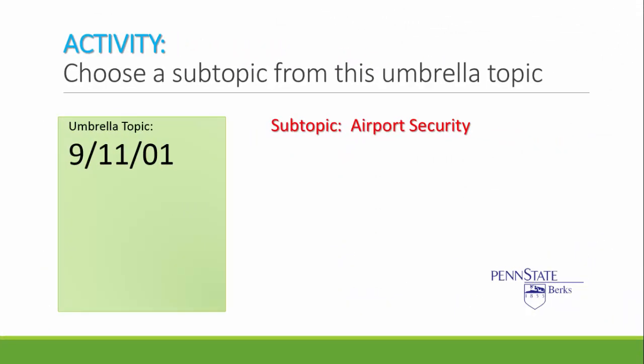For this module and the next module, you will be using a consistent activity to practice the skills that you are learning within the module. You are encouraged to download the worksheet, as this will become a few of your homework assignments. Our first step in this activity worksheet is to choose a subtopic from the umbrella topic of September 11th, 2001. Pause this video for a moment and consider your subtopic. After you've paused and considered your subtopic, restart the video after jotting it down. For the sake of our discussions, I will choose airport security as my subtopic.